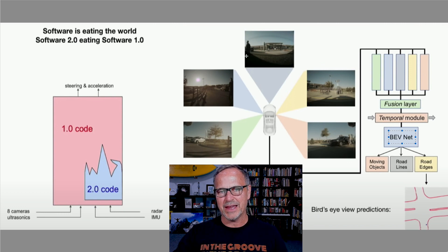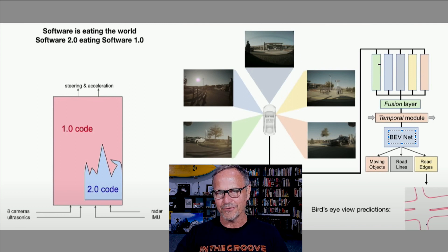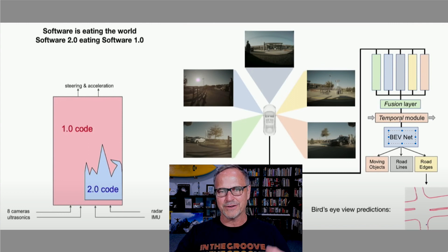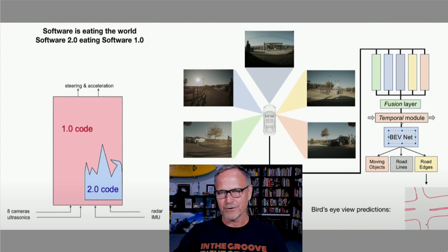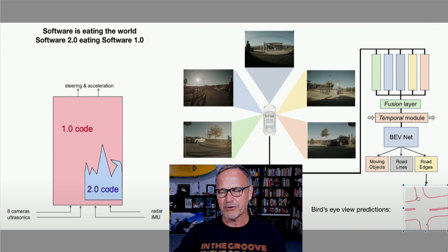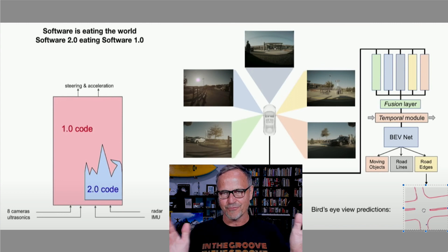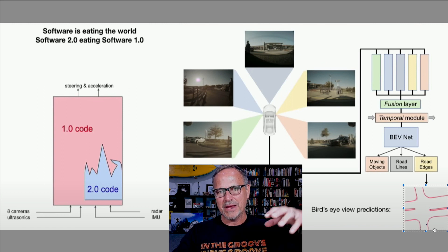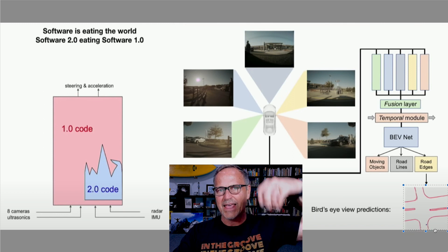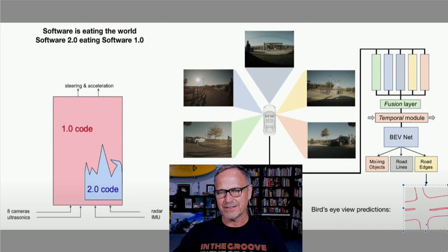Essentially, the sensors on the cameras go into a bunch of mini neural networks that are then fused together. They go into a fusion layer, then into a temporal layer so that they're melded into a video sequence rather than still frame images. Then it goes into the BEV net, or bird's-eye view network, which makes it a top-down view. That's why we're seeing the car as a sort of top-down view. From there you can see an image of what it's projecting into the space — the red lines indicating the edges of the road, and a whole bunch of other things like moving objects, road lines, road edges, cars, stop signs, etc.